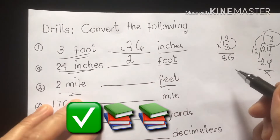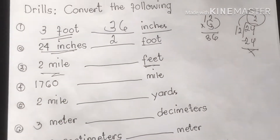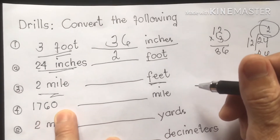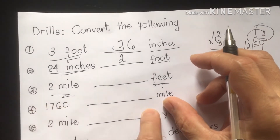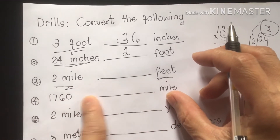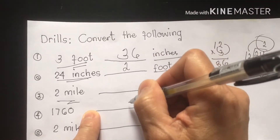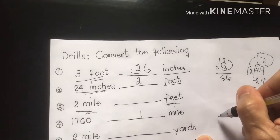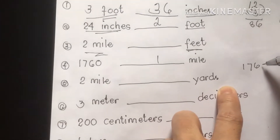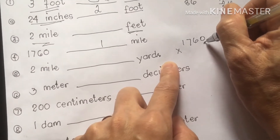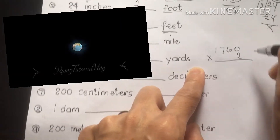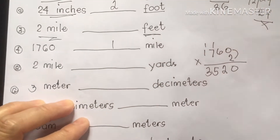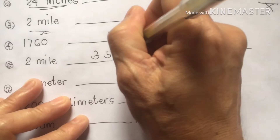Next: 2 miles, how many yards? Remember, we are going to multiply it. 1,760 yards is equivalent to 1 mile only. So 2 miles is equivalent to how many yards: 1,760 times 2. The answer is 3,520 yards.